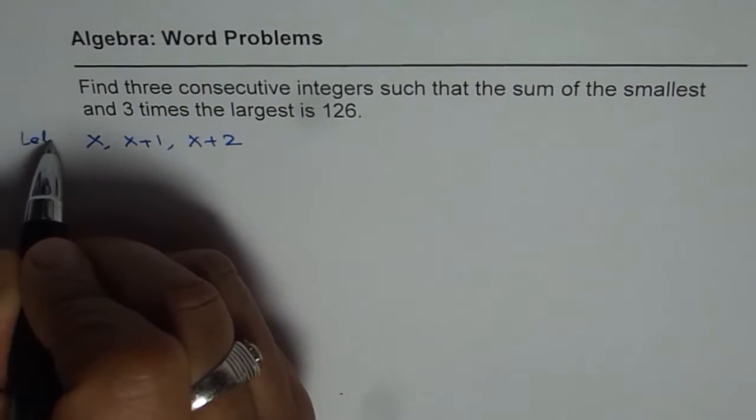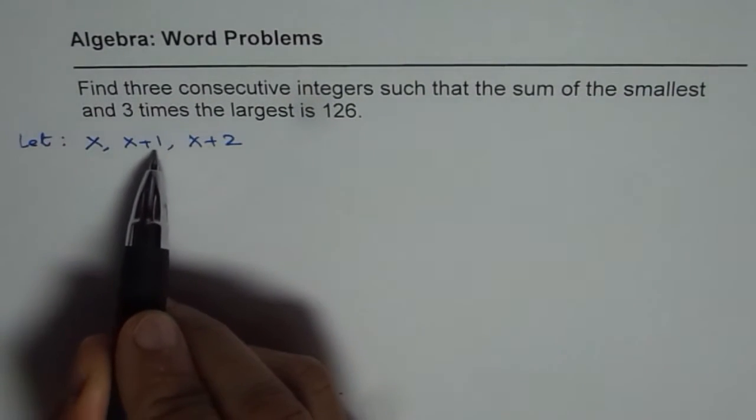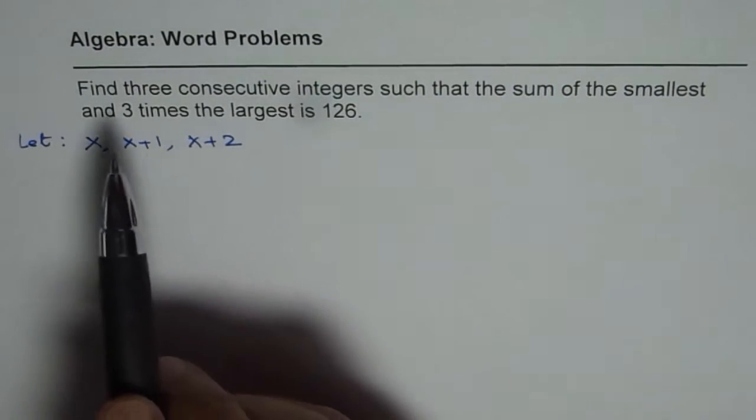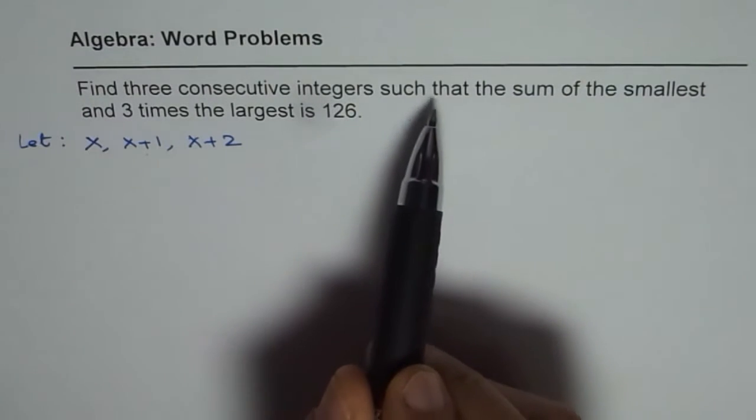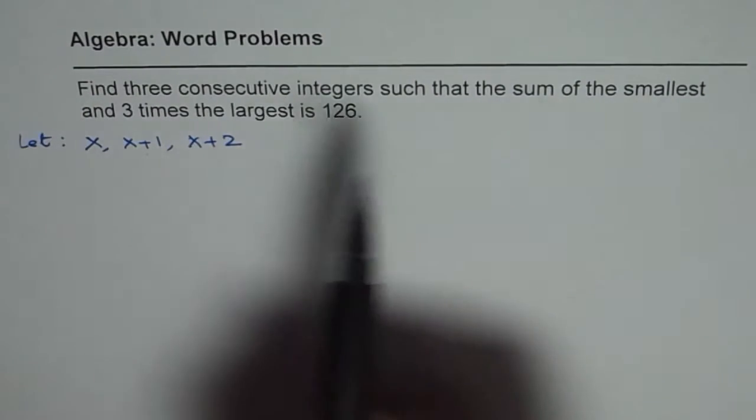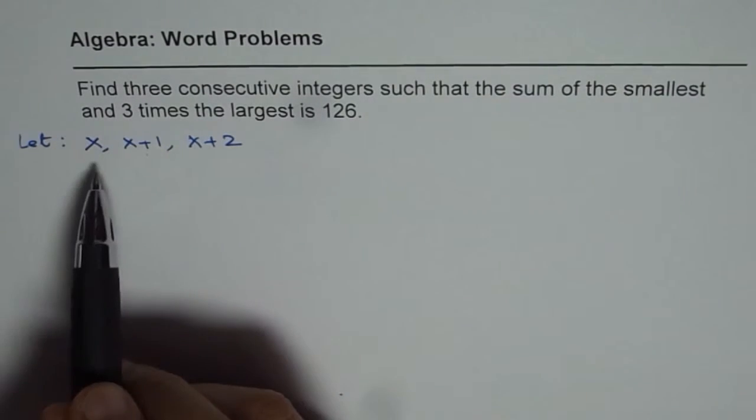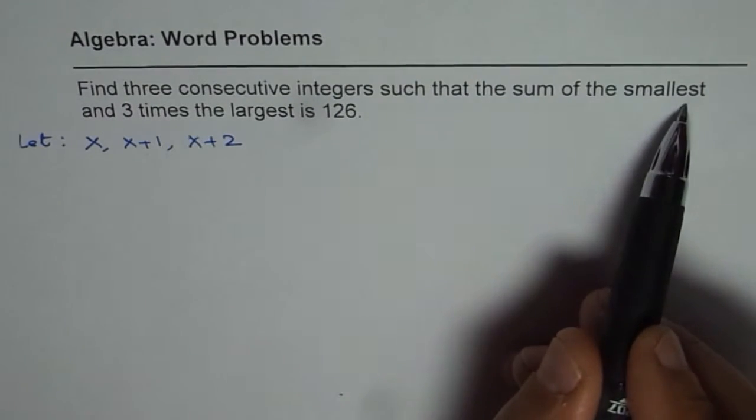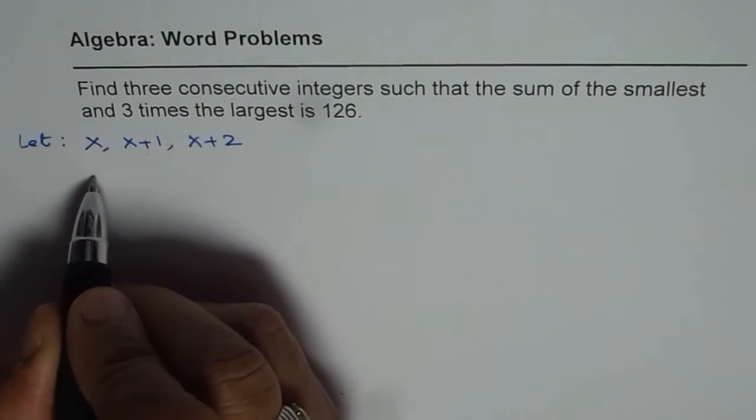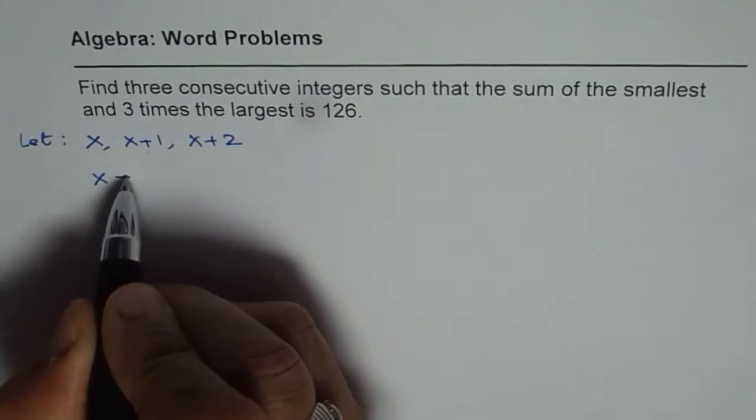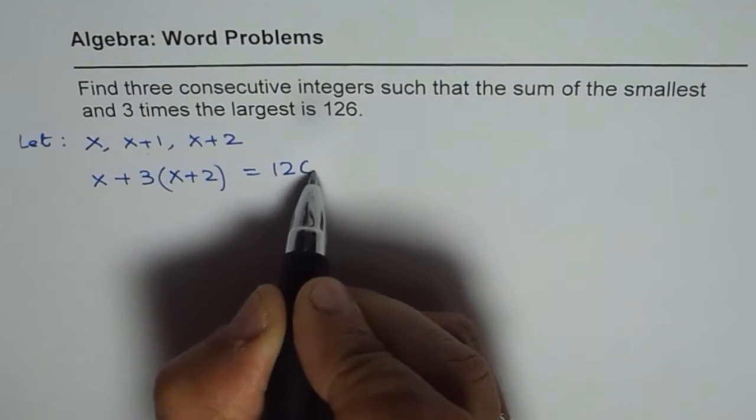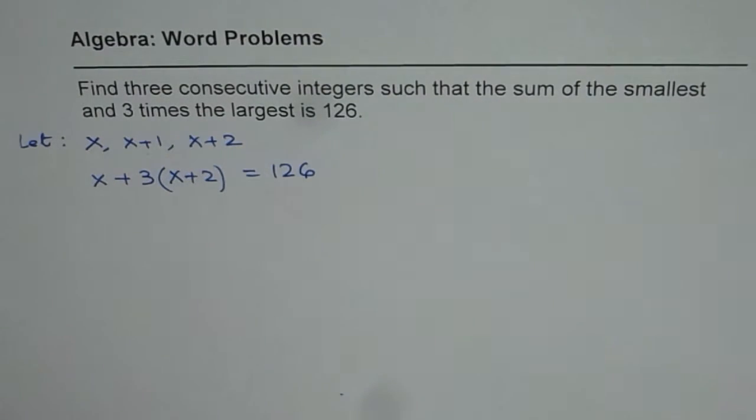So the let statement: let the integers be x, x plus 1, and x plus 2. I am saving on space since I will show you two different ways of doing the same question. Now the question is find three consecutive integers such that the sum of the smallest and three times the largest is 126. So x is smallest and largest is x plus 2. The sum of the smallest plus three times largest, which is x plus 2, equals 126. So from this statement we get the equation.